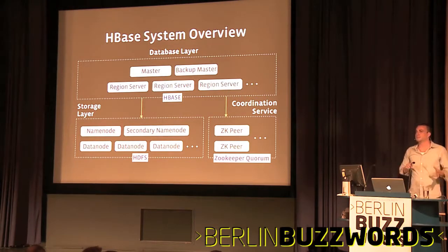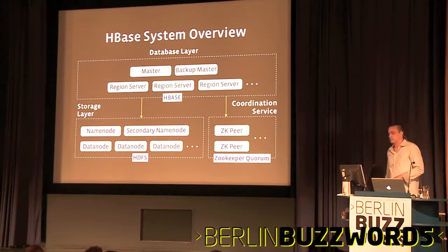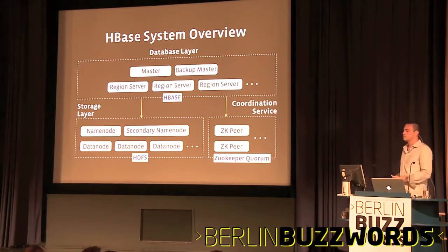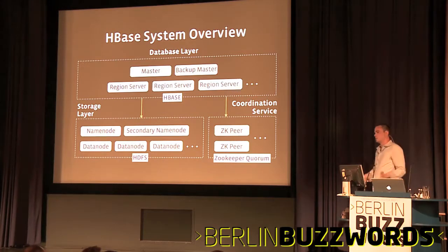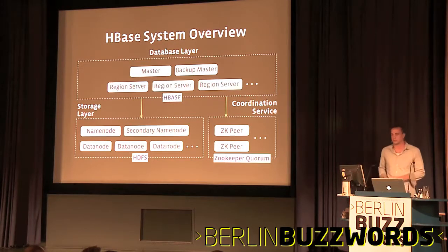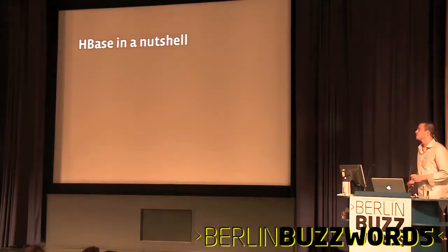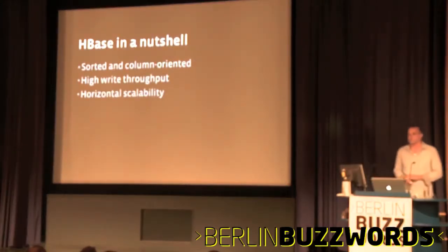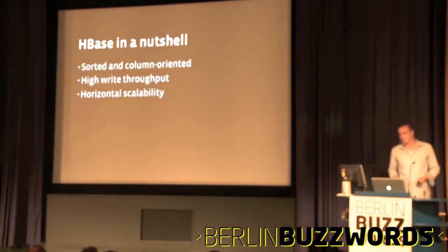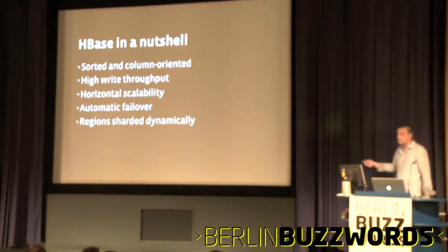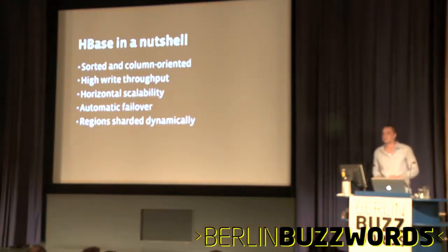The reason we build in 100-node pods is basically fault isolation. If I need 1,000 nodes for my user base and I build one 1,000-node cluster and something happens, every user is impacted. But if I build ten 100-node clusters, if something happens to one cluster, only 10% of the user base is going to be impacted. So HBase in a nutshell: it's sorted, column-oriented, high write throughput, horizontally scalable, automatic failover, and the regions are sharded dynamically.